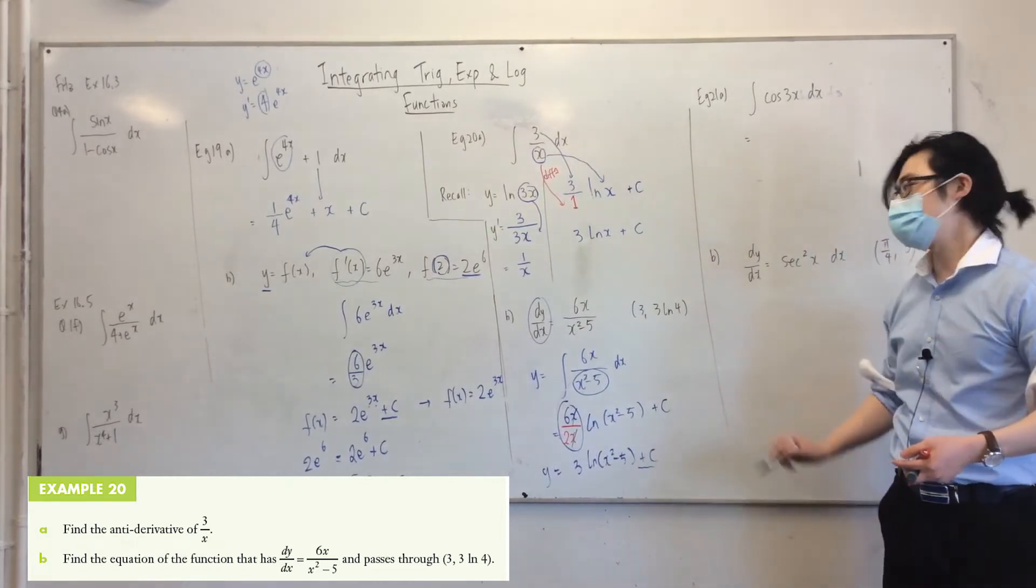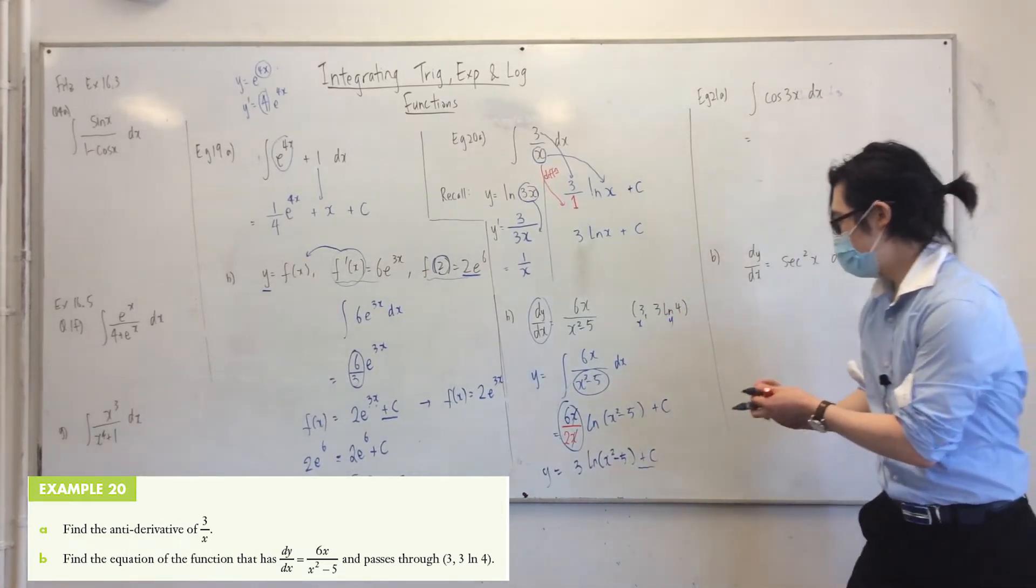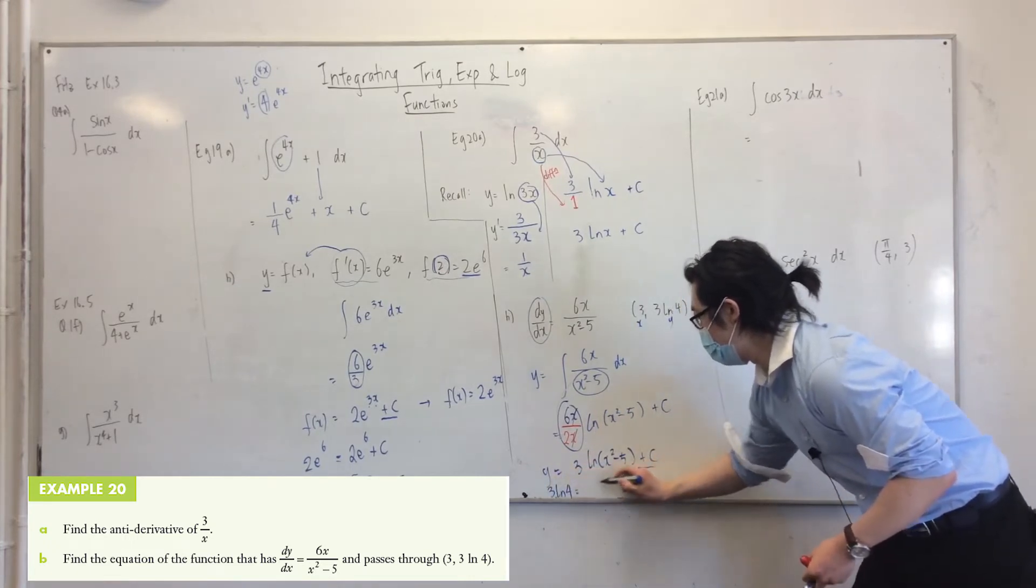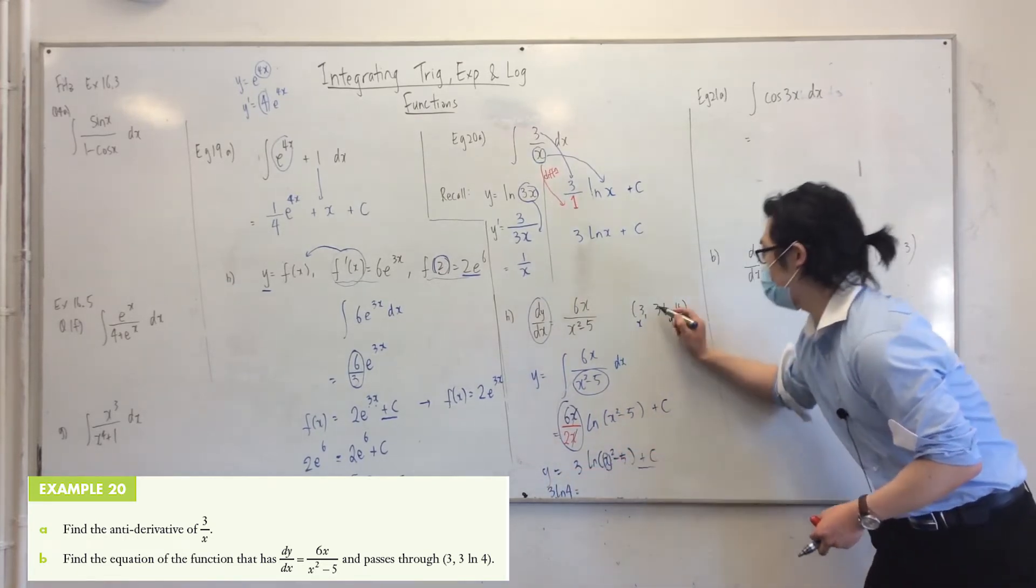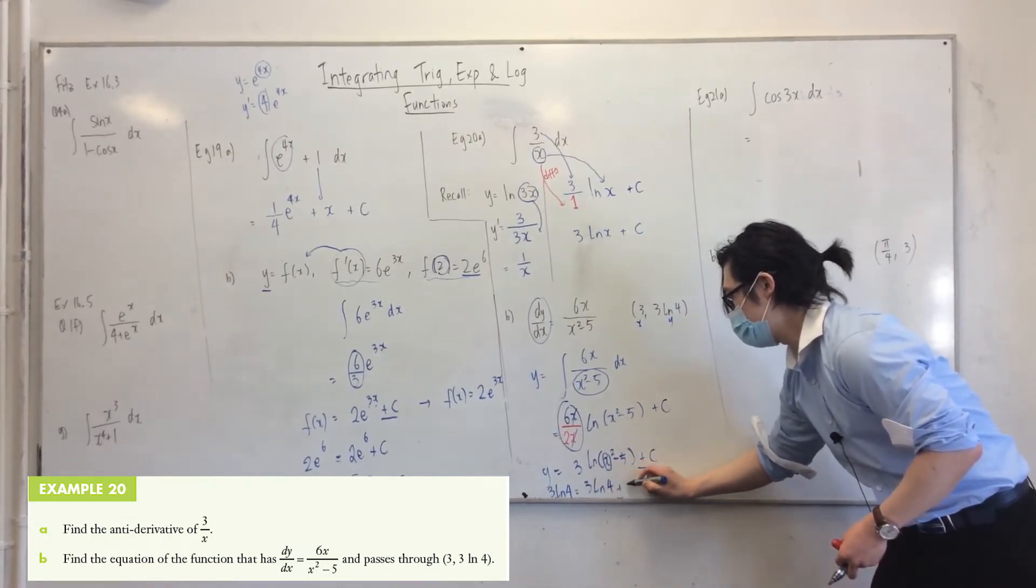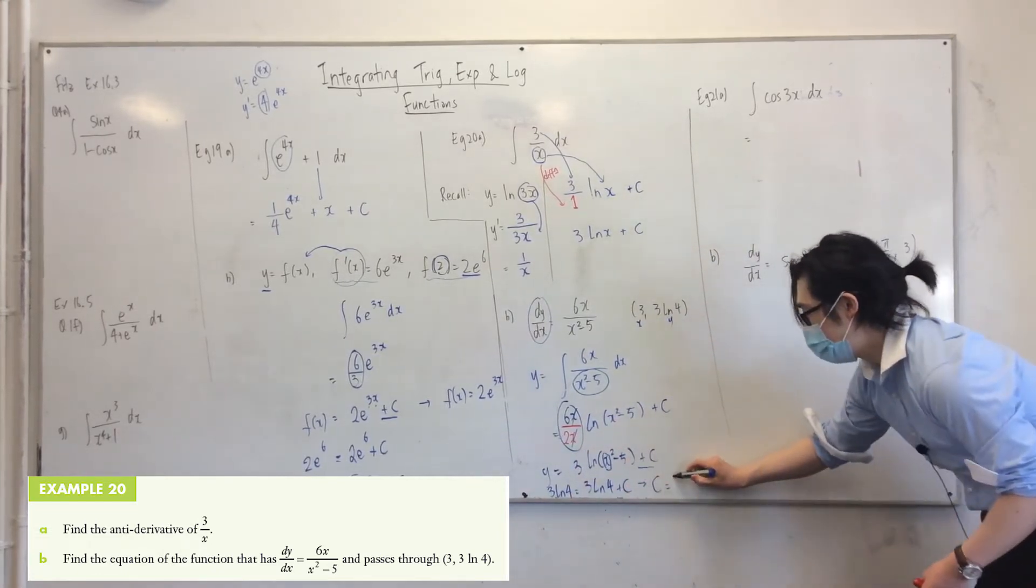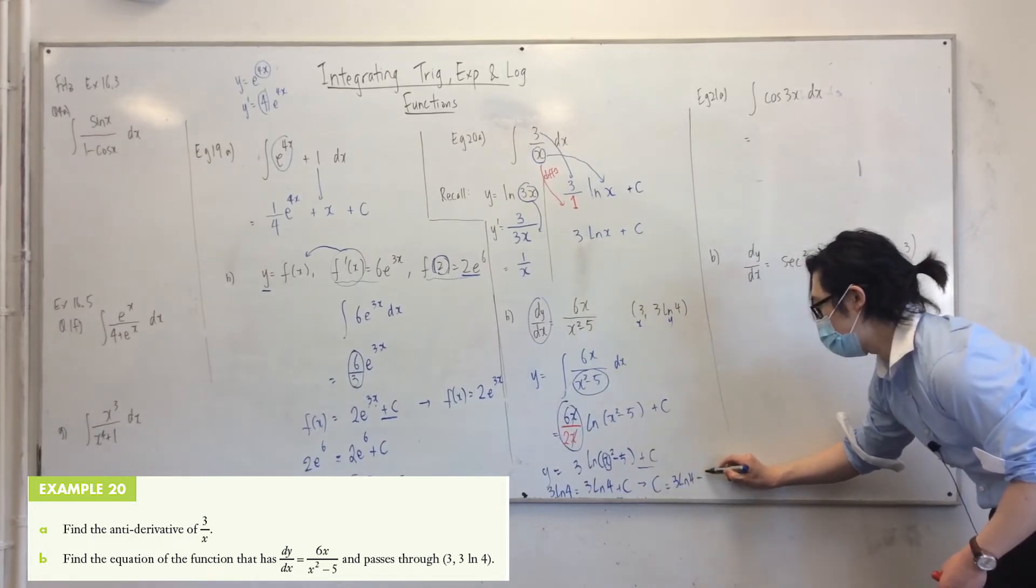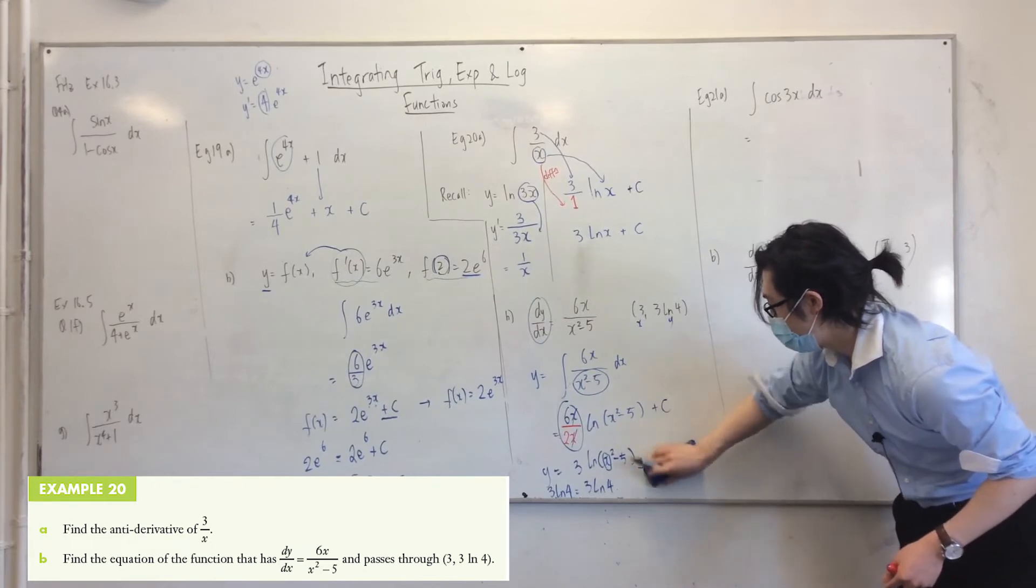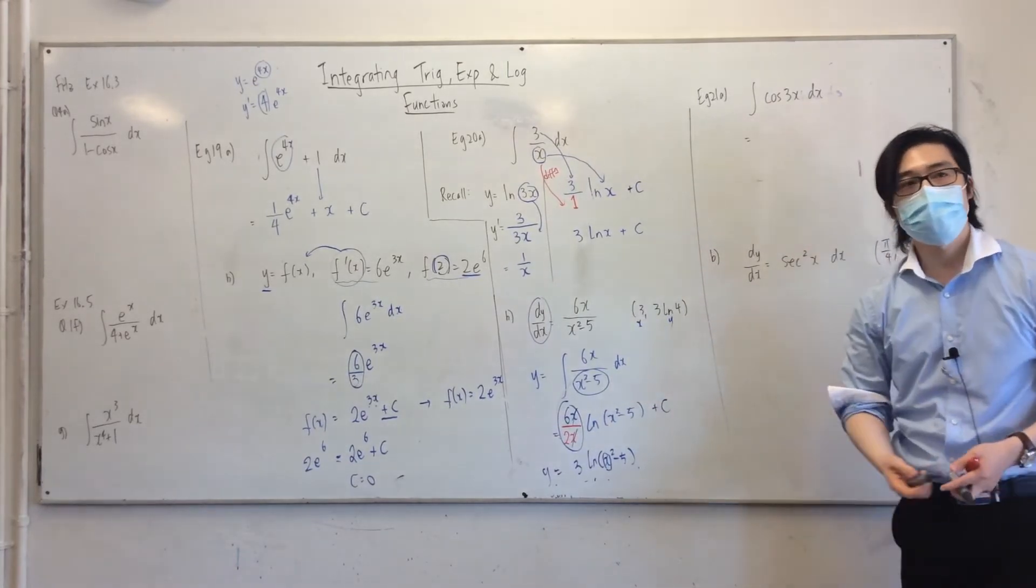Now, we need to find 5 plus c this time because we're given these values. So let's do that. So my y is 3 ln 4. If I substitute for x, which is 3, I get 3 ln... What's that? 3 squared minus 5? 4 plus c. So to figure out what c is, that's 3 ln 4 take... Oh, it's 0. Yeah, same thing. So basically, I can just say the equation is just that. Okay?